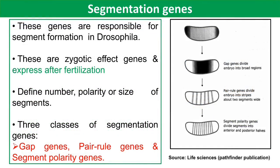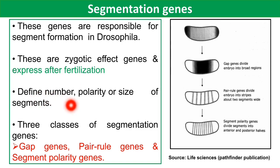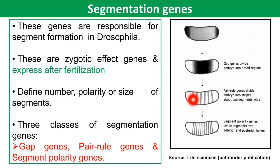The second type of pattern regulating gene is the segmentation gene. These genes are responsible for segment formation in Drosophila, are zygotic effect genes, and are expressed after fertilization. Segmentation genes define the number, polarity, and size of segments. There are three classes: gap genes, pair-rule genes, and segment polarity genes. Gap genes divide the embryo into broad regions; pair-rule genes divide it into stripes; and segment polarity genes divide segments into anterior and posterior halves.